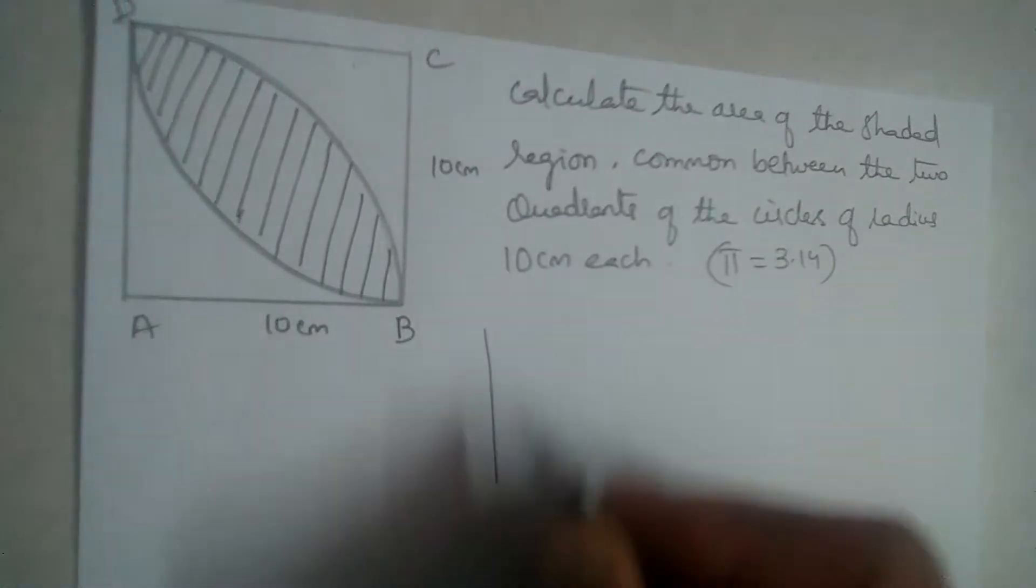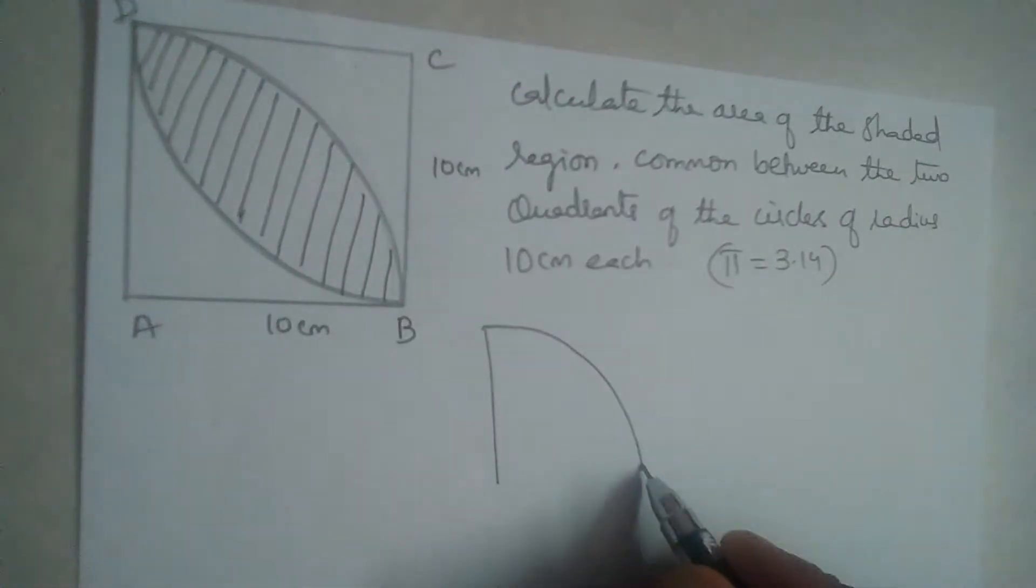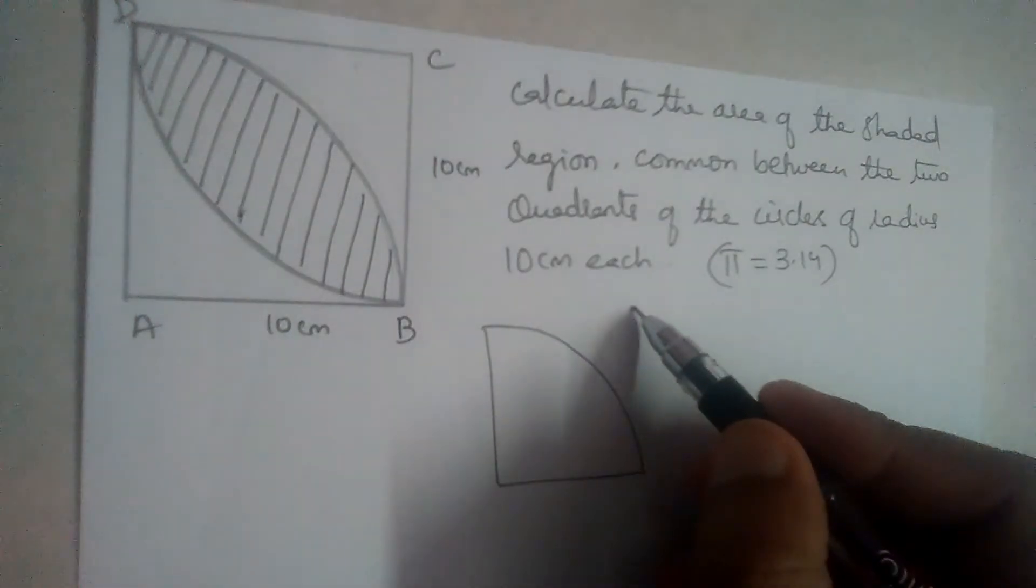That means we have a quadrant here like this. One quadrant, and there is one more quadrant.